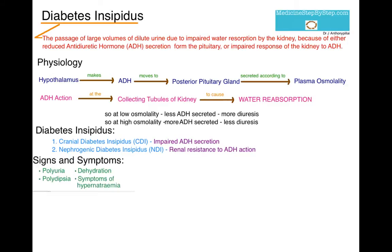In the signs and symptoms, there is polyuria. Because of the polyuria, there is compensatory polydipsia. Of note, this is different from primary polydipsia, which is a psychiatric disturbance where there is excessive intake of water. The patient with diabetes insipidus will be dehydrated.